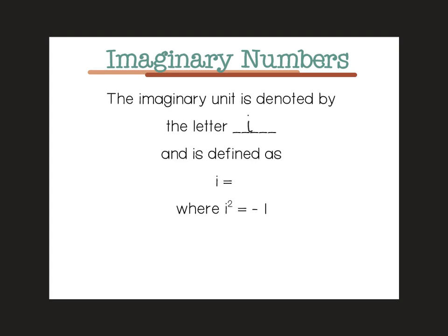i is defined as the square root of negative 1. And so if we were to square both of those, we would figure out that i squared equals negative 1.